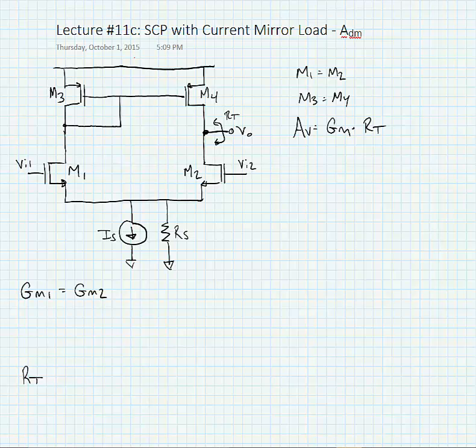Today we're going to look at using an active load on a source coupled pair, namely a current mirror load. This is in the same vein as when we started using transistors as active loads for our single-ended amplifiers.